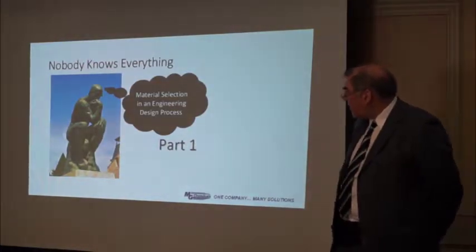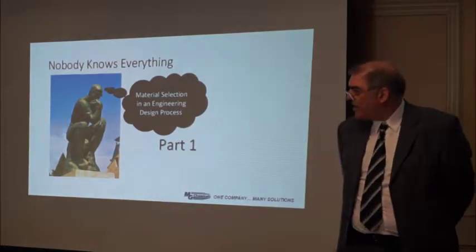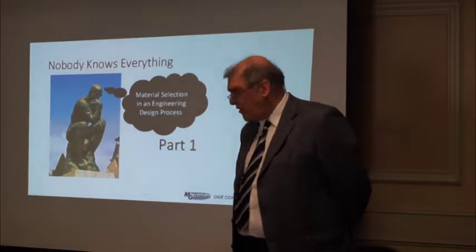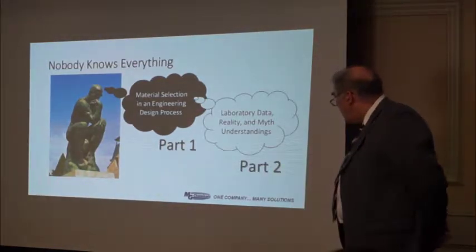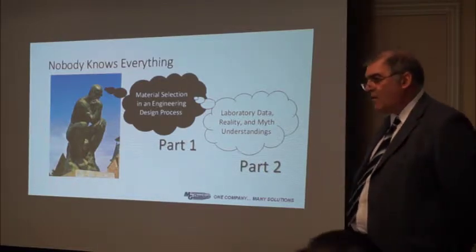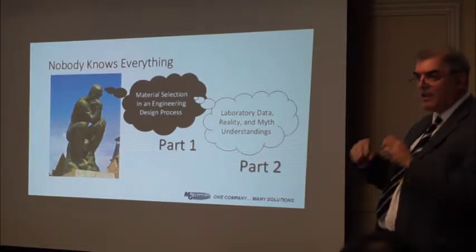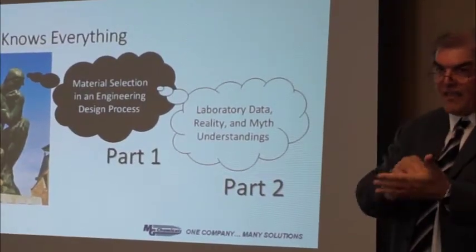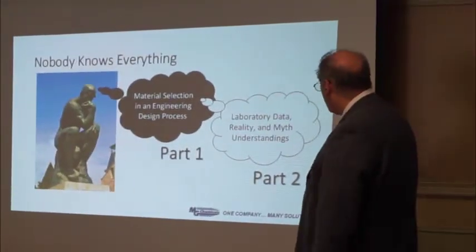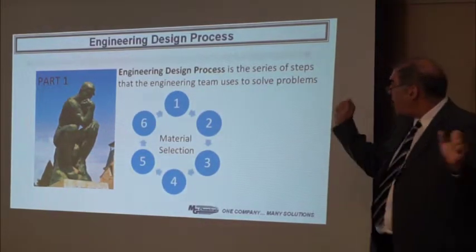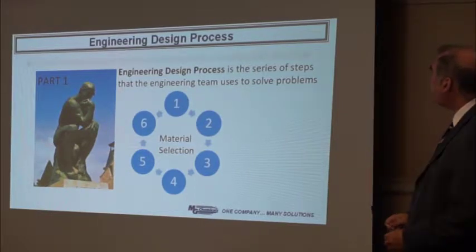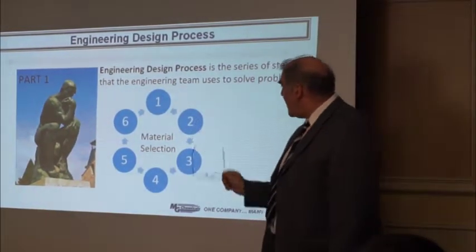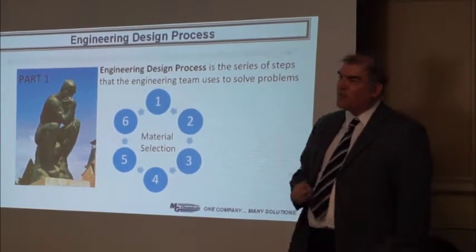What I'm going to be talking about has two parts. The first part: material selection in an engineering design process — we'll see what the engineering design process is. The second part: we'll look at laboratory data and how it fits with your organization's aims, examining various properties and how to translate a technical data sheet into your organization's goals. There are essentially six steps you should be concerned about in material selection.